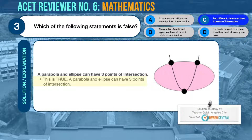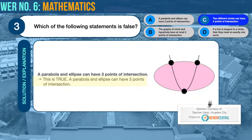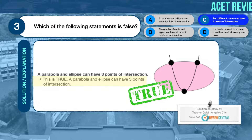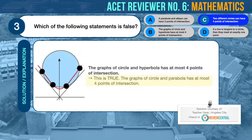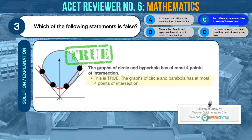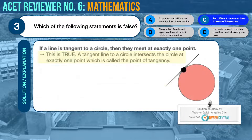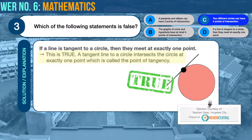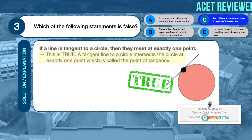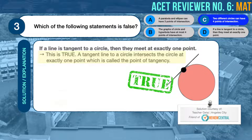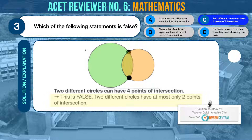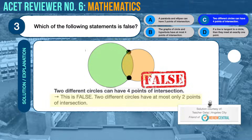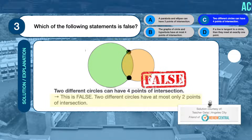Let's inspect and evaluate each of the given answer choices to determine which one is false. A parabola and an ellipse can have three points of intersection. This is true, as shown in the figure. The graphs of a circle and hyperbola have at most four points of intersection. This is also true, as shown in the figure. If a line is tangent to a circle, then they meet at exactly one point. This is of course true. The very definition of tangent is that two objects meet at exactly one and only one point, without intersecting each other. Lastly, let's evaluate the statement in option C: two different circles can have four points of intersection. This is false. Two different circles have at most only two points of intersection, as shown in the figure. Since we are looking for the false statement, the correct answer is C.